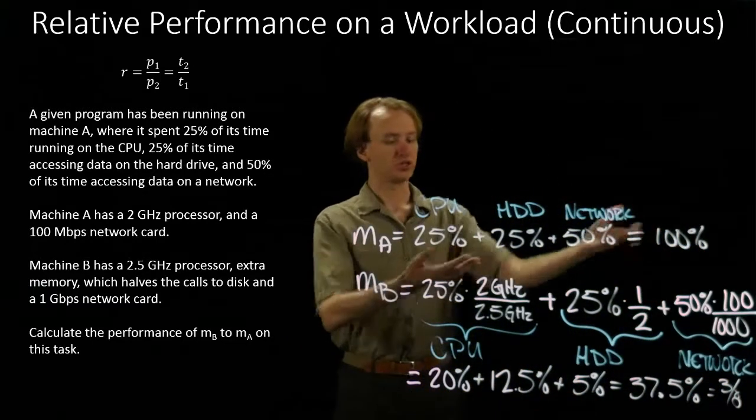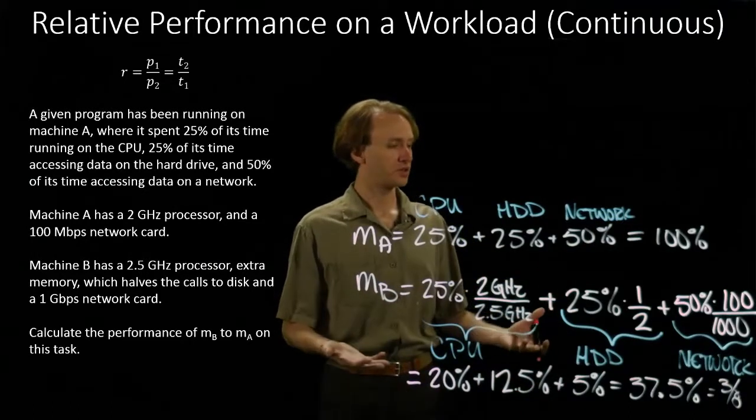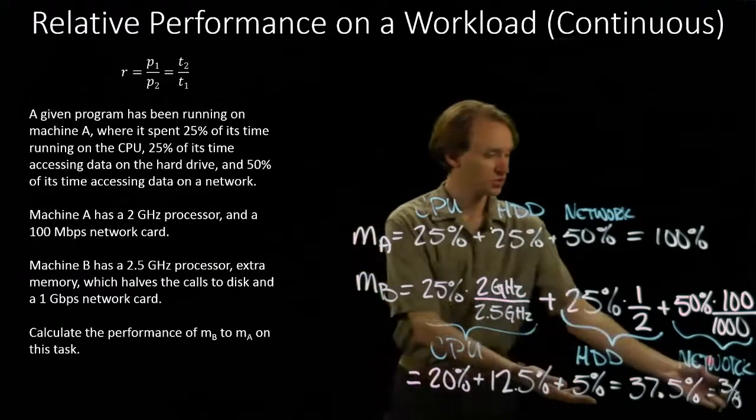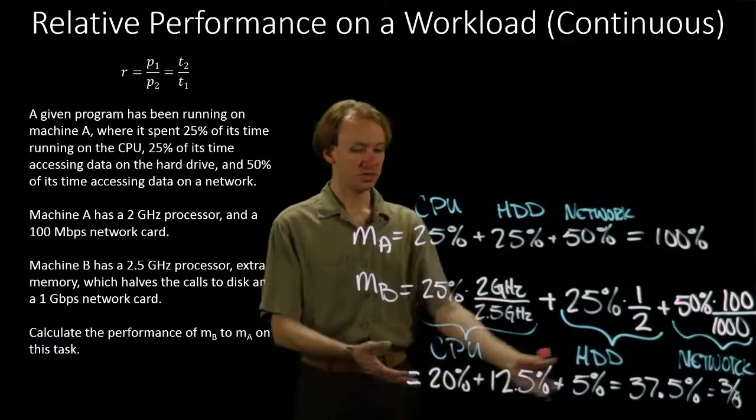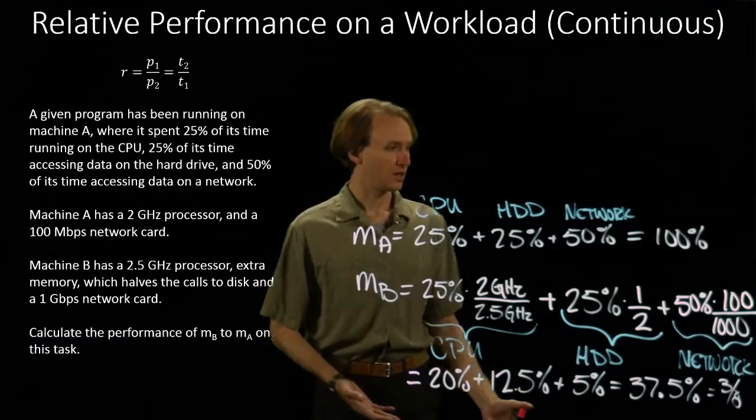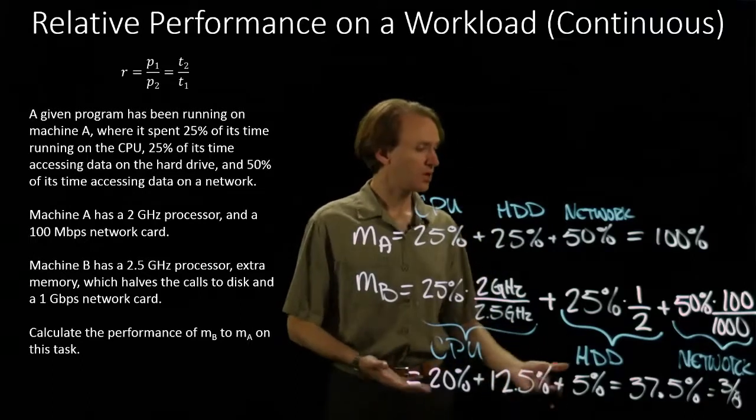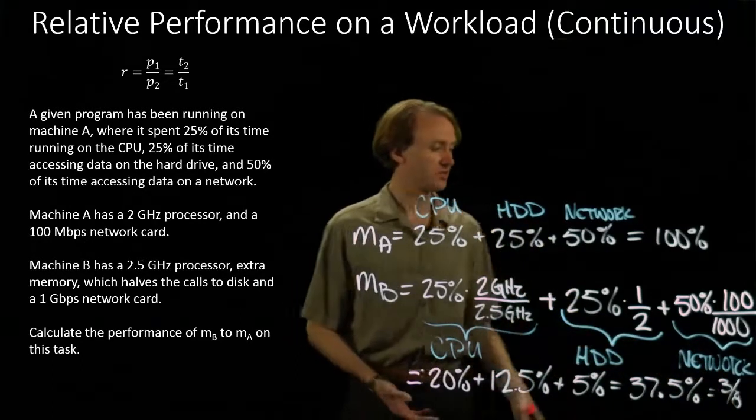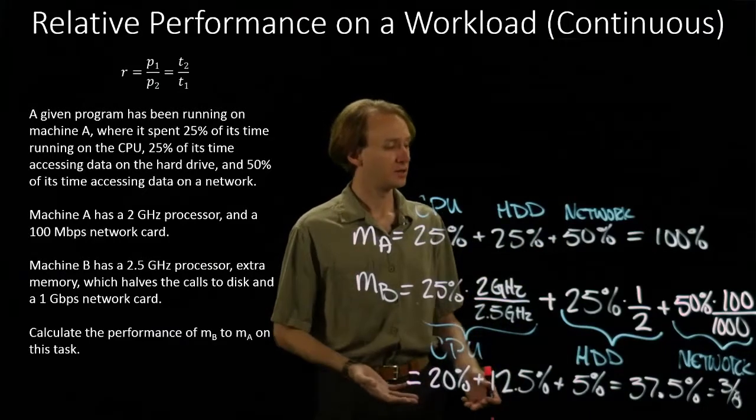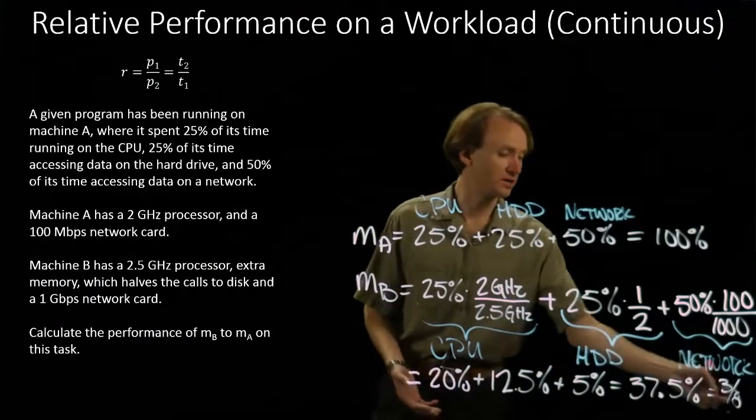So machine A took 100% of the time. Machine B is only taking 3 eighths as much time. So machine B is clearly faster. And how much faster is it? Well, it's 8 thirds times faster than machine A, because it runs in 3 eighths as much time.